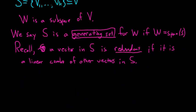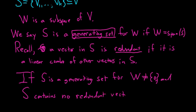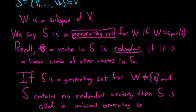If, this is the key statement here, S is a generating set for W and W is not equal to simply this trivial subspace, and S contains no redundant vectors, then S is called a minimal generating set.